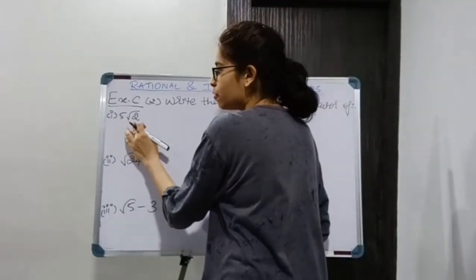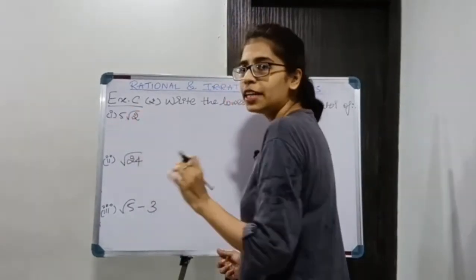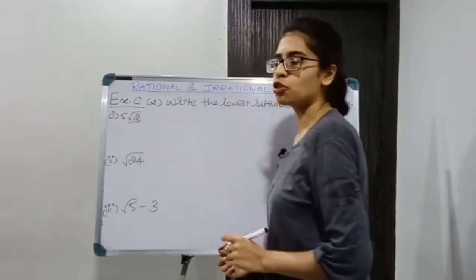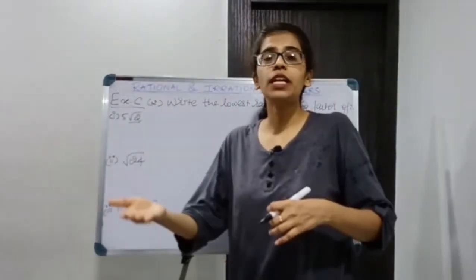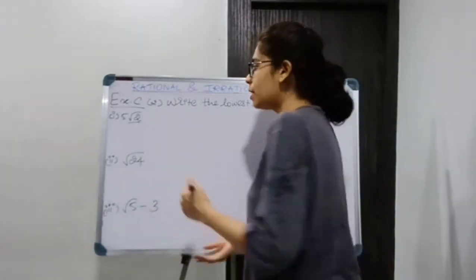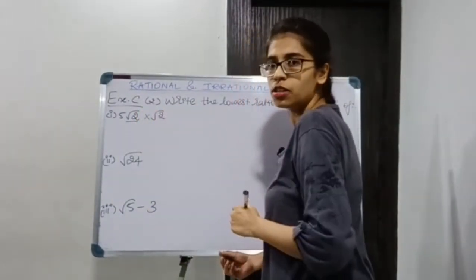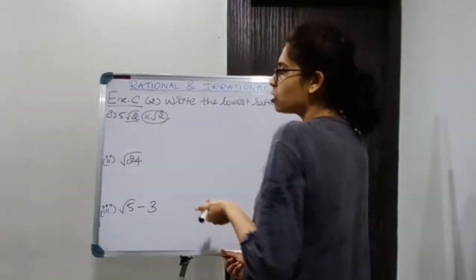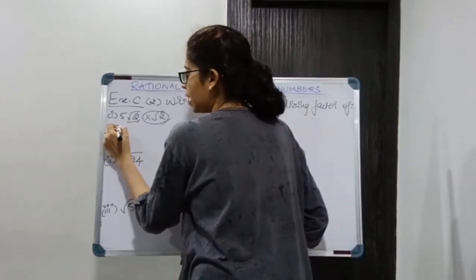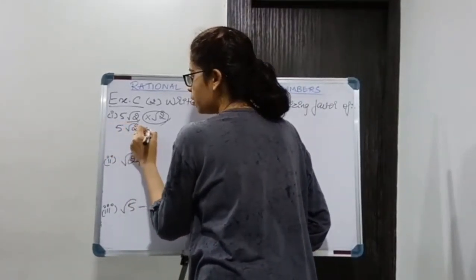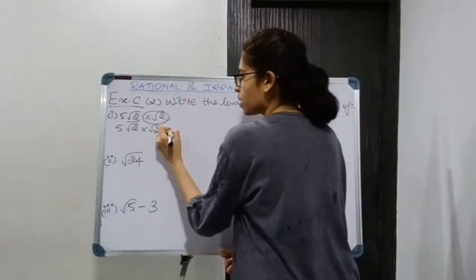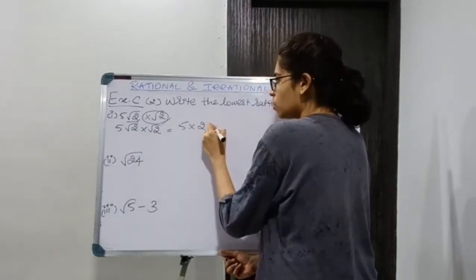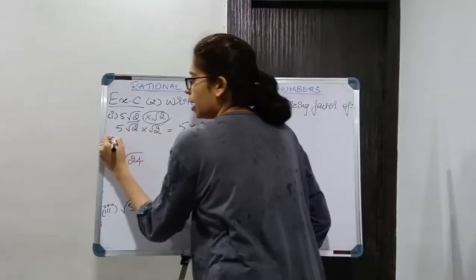For 5√2: 5 is already rational, so we need to do nothing with it. √2 is irrational, so I will multiply by √2 to make it rational. 5√2 × √2 = 5 × 2 = 10, which is rational.